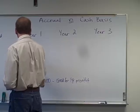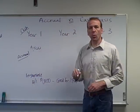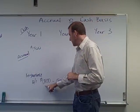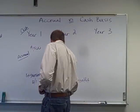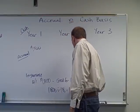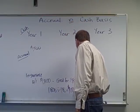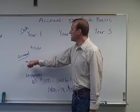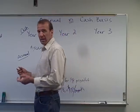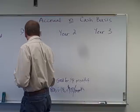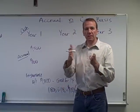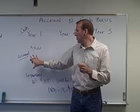Under the accrual basis of accounting, in year one we're not going to have $1,800 of expense. This is $1,800 for 18 months, so let's see how much that is per month: $1,800 divided by 18 months equals $100 per month. In year one, we only have one month because we purchased on December 1st, so we would have $100 of expense in year one.